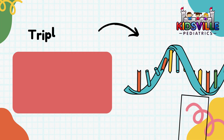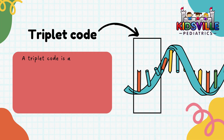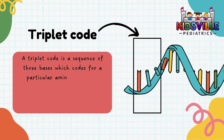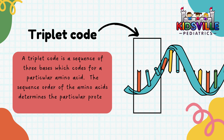A triplet code is a sequence of three bases which codes for a particular amino acid. The sequence order of the amino acids determines the particular protein produced.